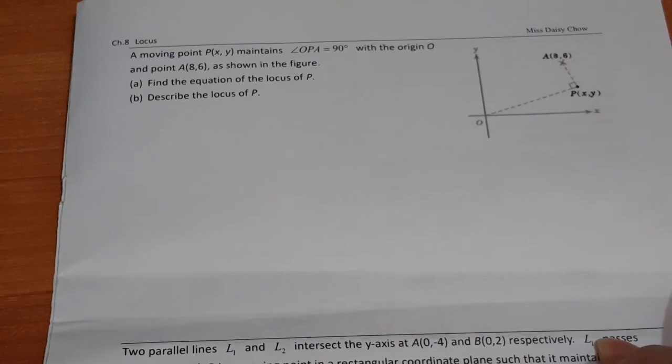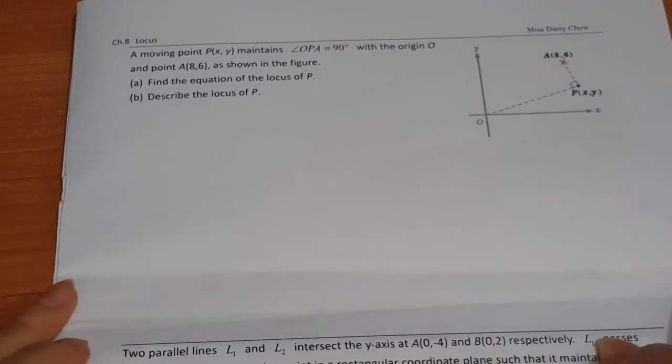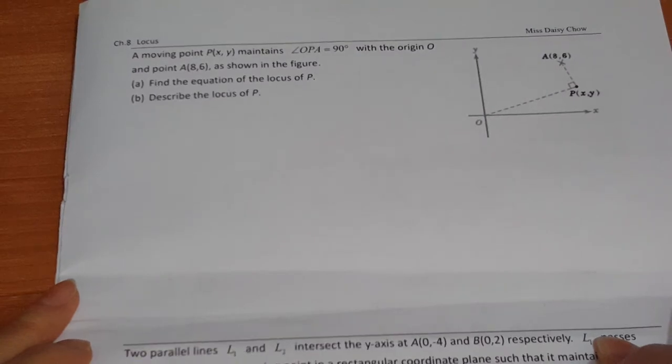Okay, your notes, page 9. Let's look at the questions together. So a moving point P maintains 90 degrees with the origin O and point A, as shown in the figure.